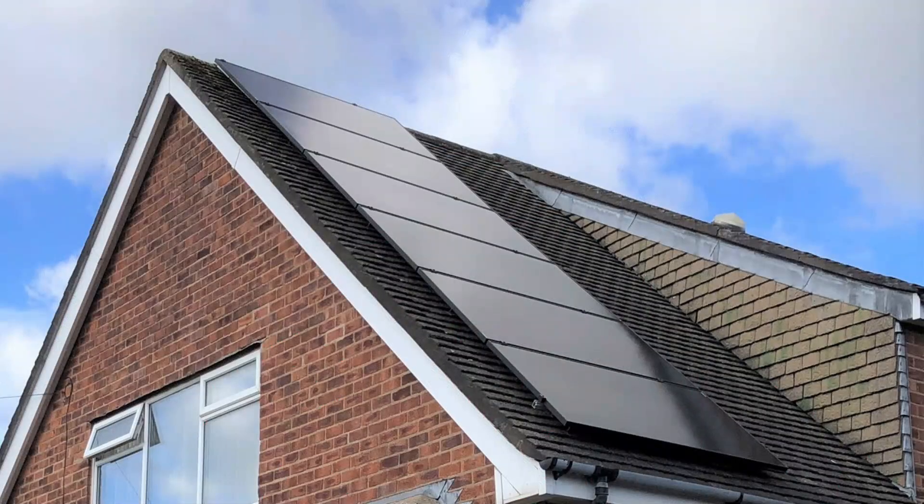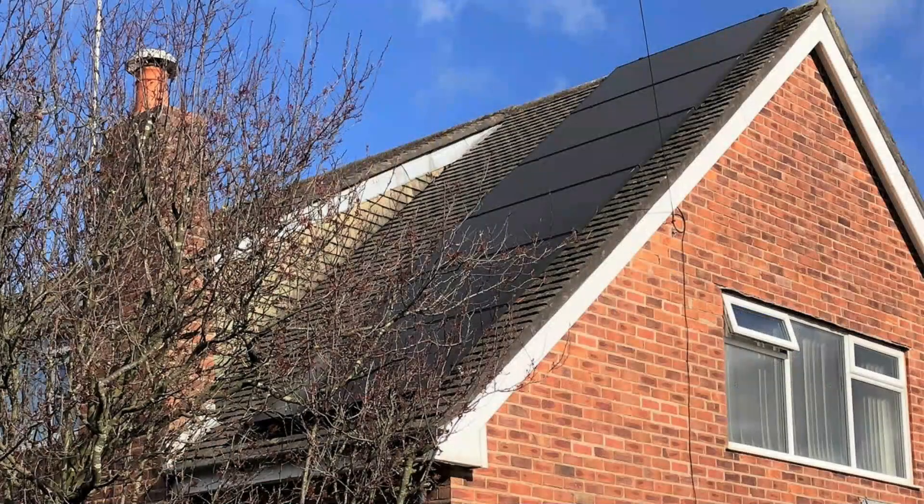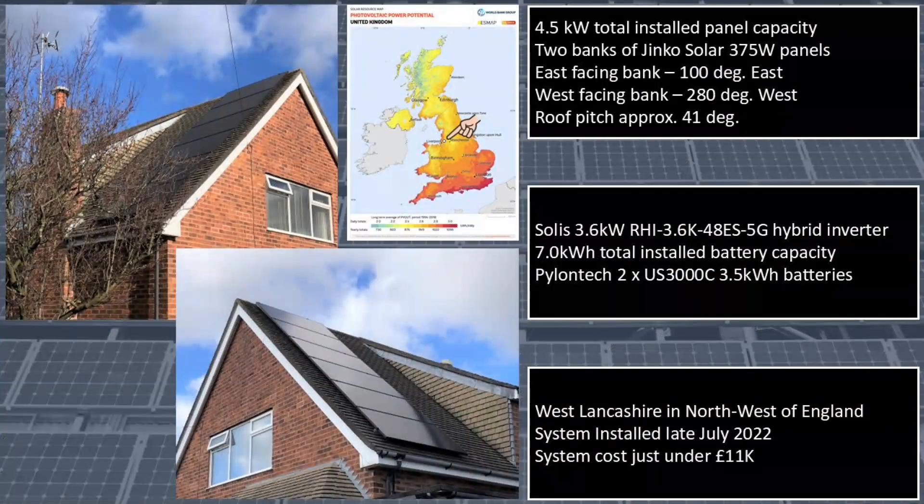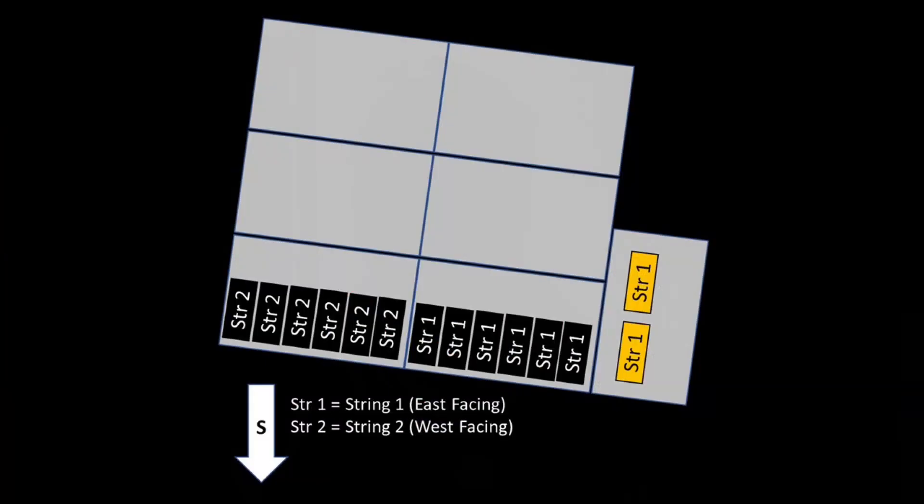Our original installation comprised two banks of six JNCO Solar 375W panels installed on broadly east and west facing roof pitches. When adding the two new panels, to keep costs down I chose to connect them in series with the existing east facing string, so no additional inverter was needed. They were a good match with the JNCO panels in terms of voltage and current.